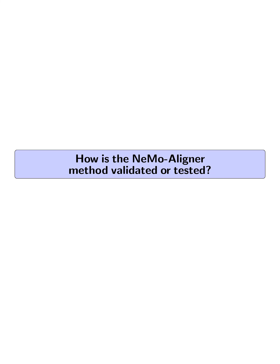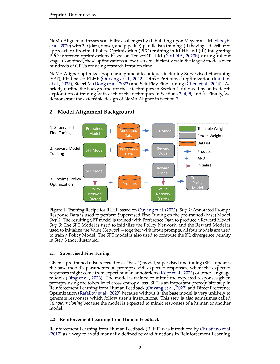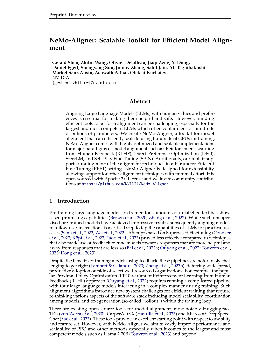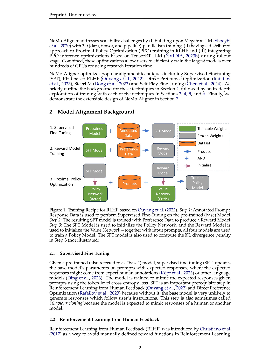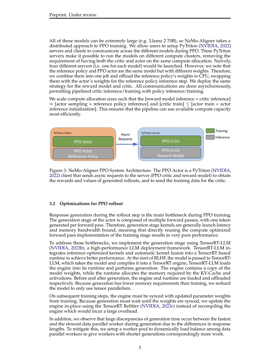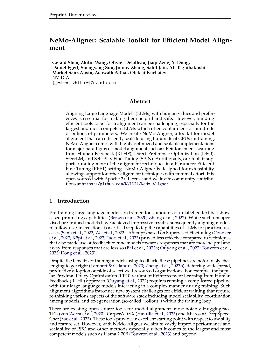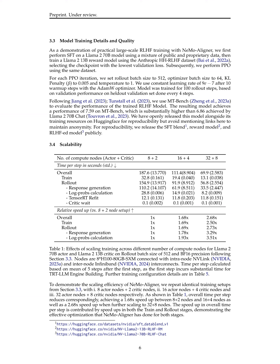How is the NEMO Aligner method validated or tested? The method is validated through practical, large-scale training experiments. First, supervised fine-tuning (SFT) is performed on a LLAMA-2 70B model using a mixture of public and proprietary data. Then, a LLAMA-2 13B reward model is trained using the Anthropic HH-RLHF dataset, selecting the checkpoint with the lowest validation loss. Subsequently, PPO is conducted using the same dataset, with specific parameters such as rollout batch size, optimizer batch size, KL penalty, and learning rate.